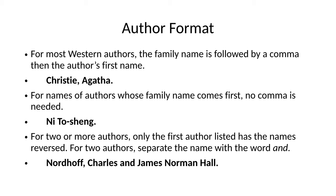For most Western authors, the family name is followed by a comma, and then the author's first name. We always start with the family name. So in the case of Agatha Christie, it would be Christie, comma, Agatha. For names of authors such as many Oriental authors whose family name comes first, no comma is needed. So, Ni Tosheng — Ni is the family name, so there's no comma.